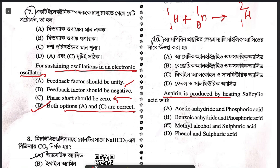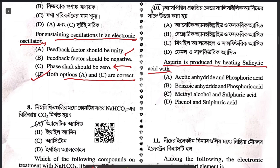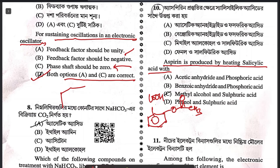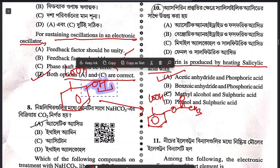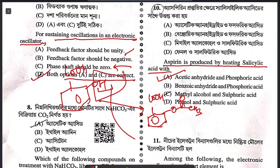Question 10: aspirin is produced by heating salicylic acid with what? First we must know the structure of aspirin — acetoxybenzoic acid. The only possible answer is acetic anhydride plus phosphoric acid. In acetic medium, the hydroxyl group of salicylic acid will convert to an acetate group.